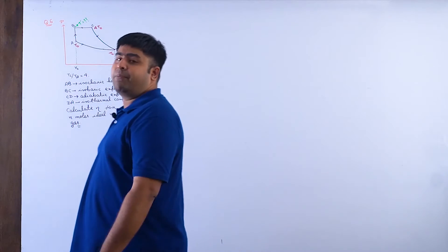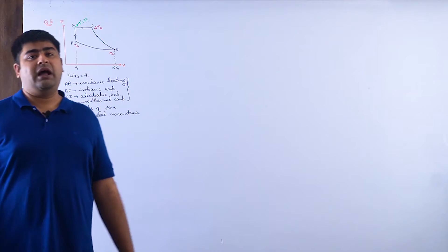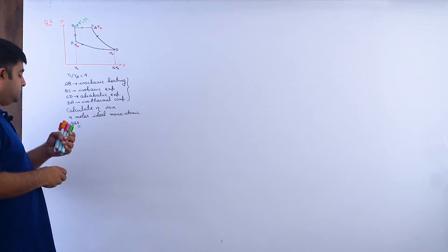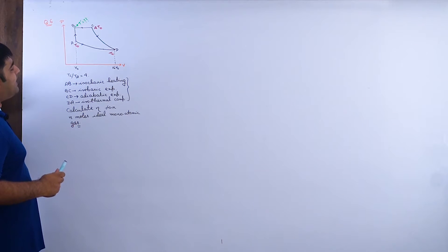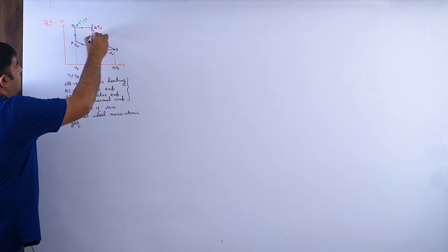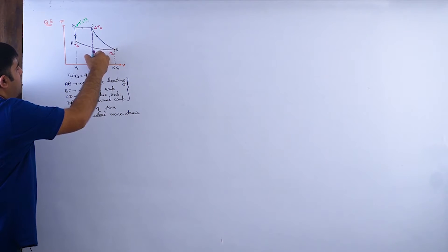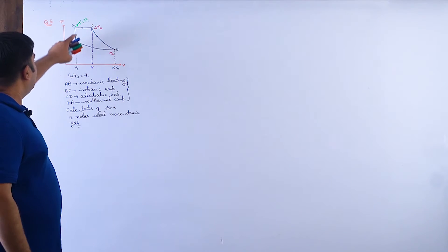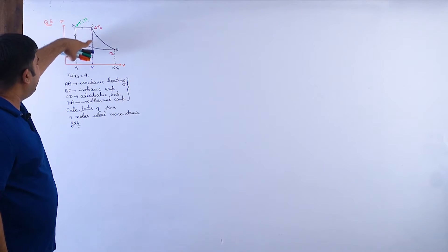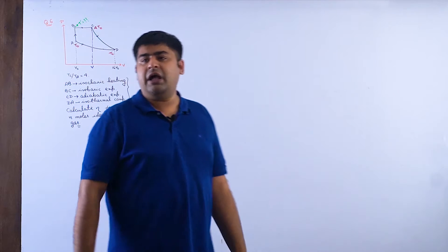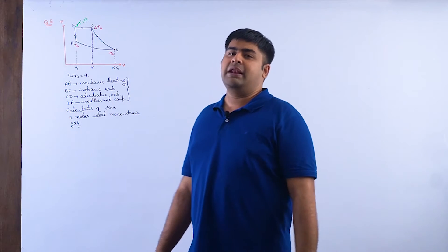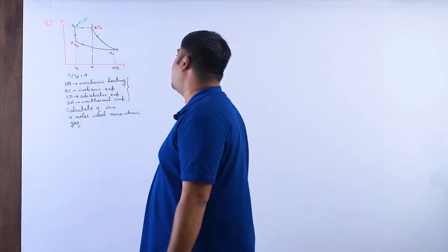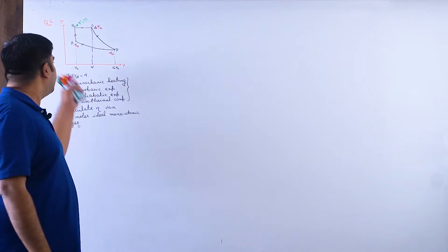To find the temperature at point B, we should first find its volume. If we can find the volume at B by some method, and we already know the volume at A is V_not, then we can get the temperature at B. Once we have all temperatures, solving the full problem becomes straightforward.